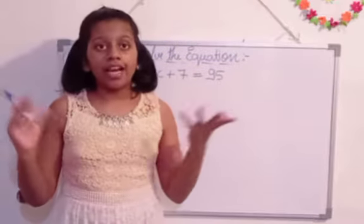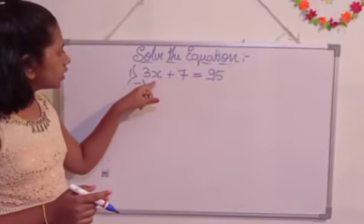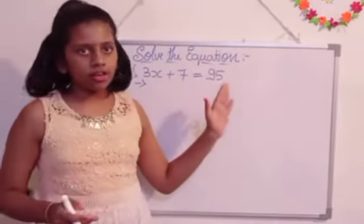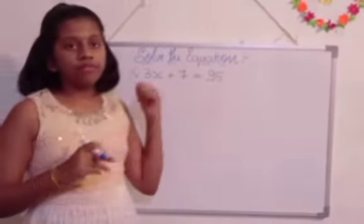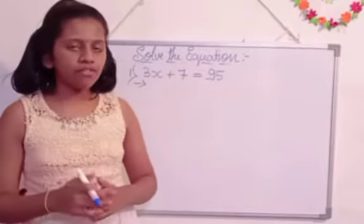There is a number, that number we are not knowing. So if we got that number, we can solve the equation and we can get 95. The sum is 95. So the value of the x we are going to find now.